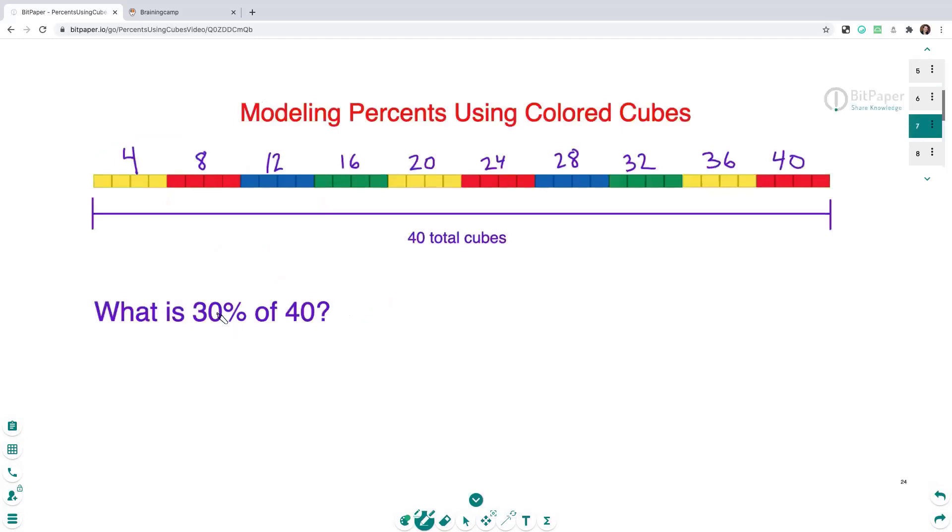And then my next one, I need to find 30% of 40. So 20% equals eight cubes, 10% was four cubes. So it looks like for every 10%, I'm adding another four cubes.